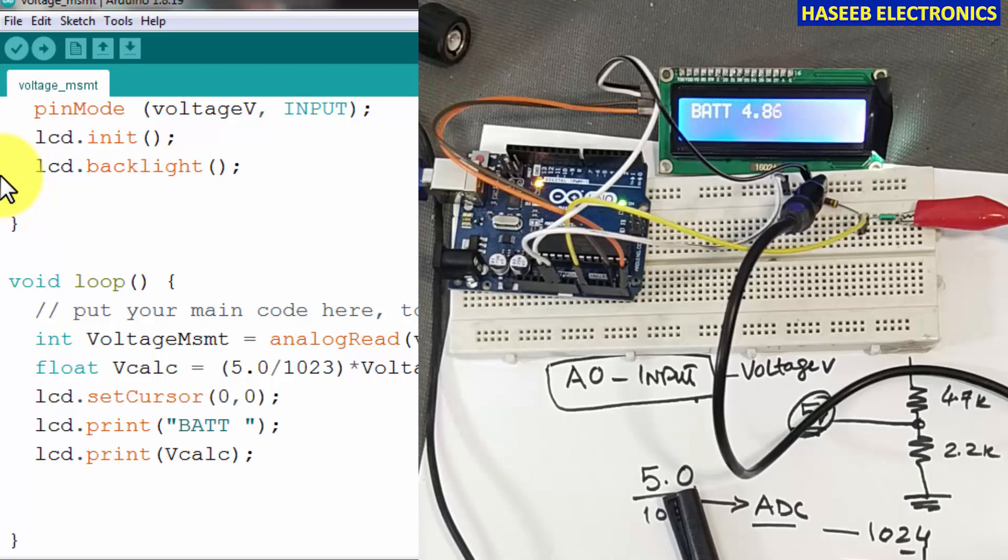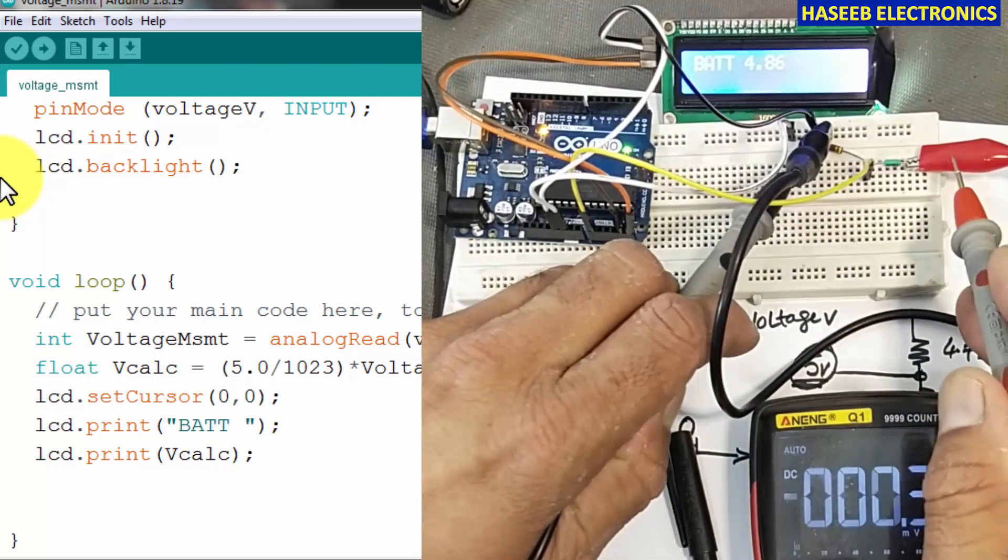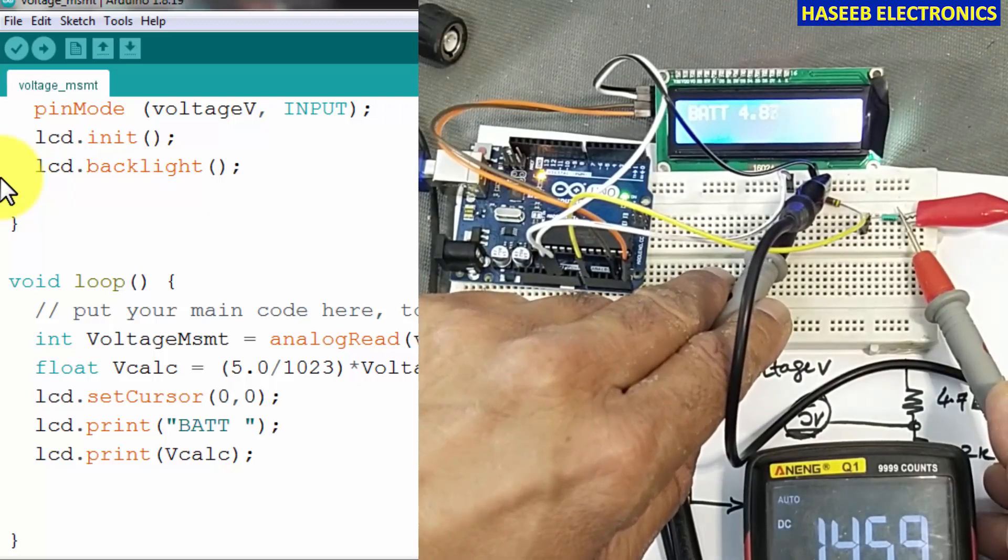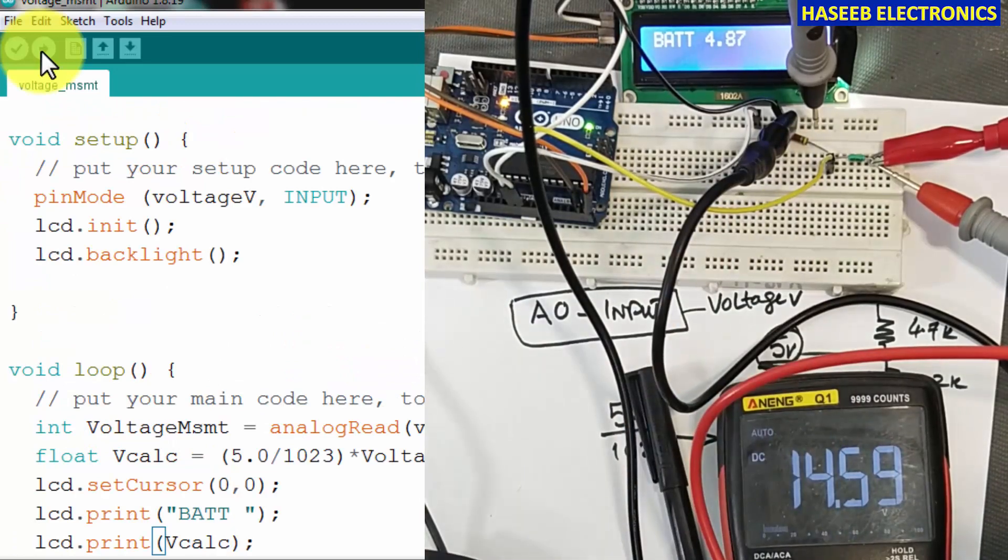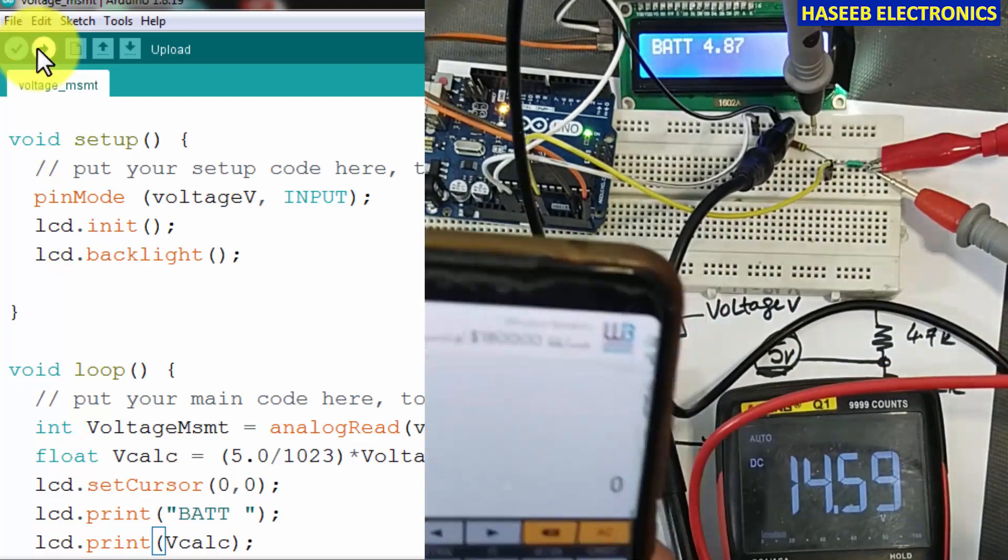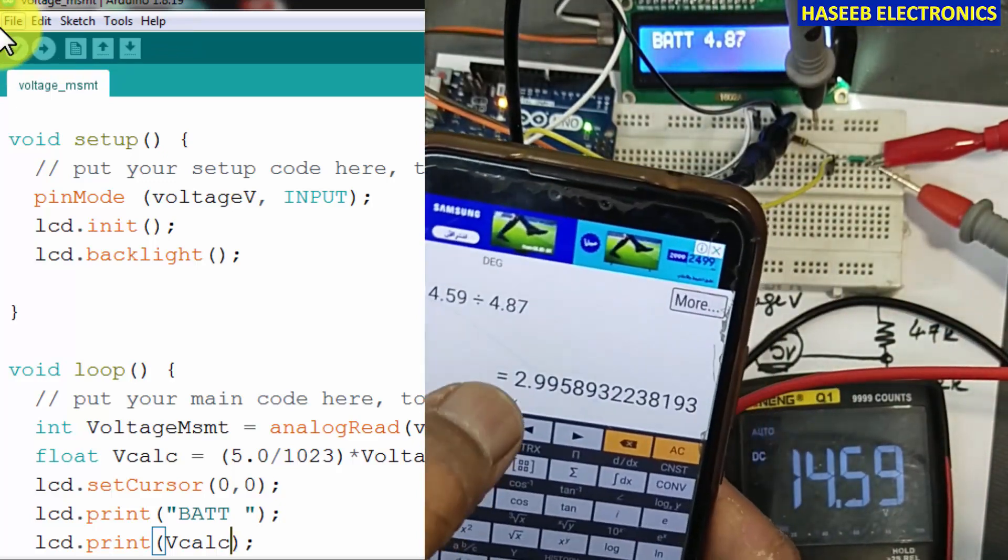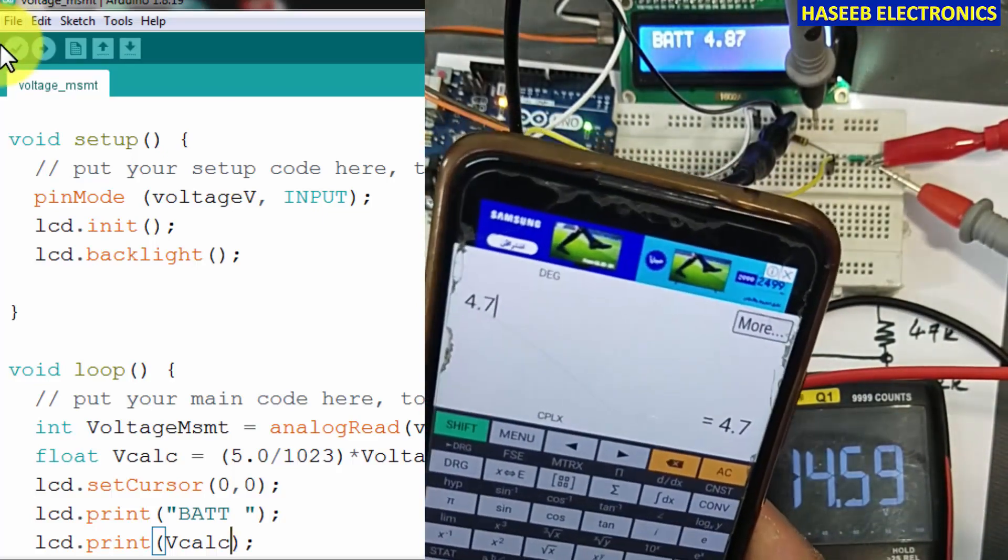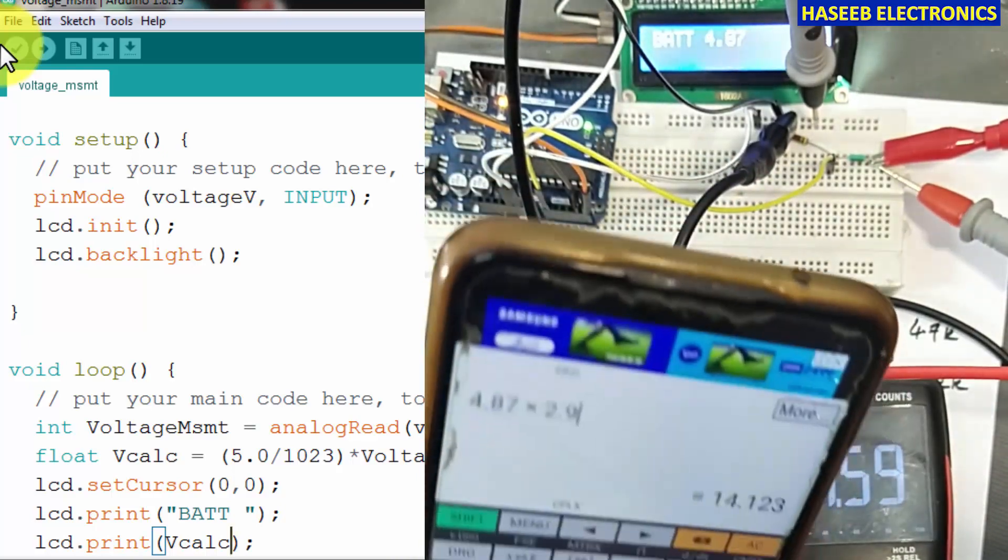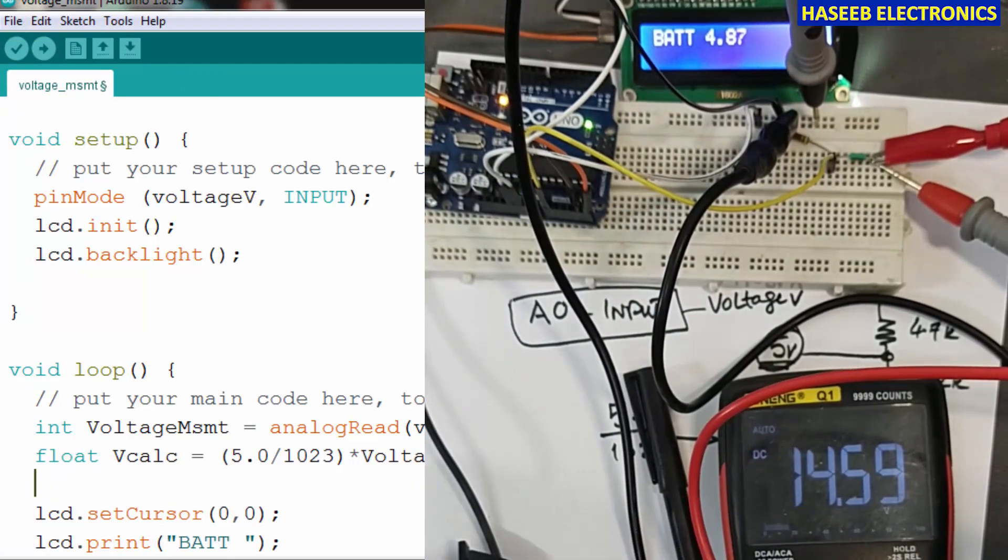4.77, and it is saying 4.8 volts. How much is the maximum voltage? It is 14.6 volts. This time it is measuring 4.87 volts. That is the drop voltage across this lower resistance. 14.59 divided by 4.87, which is being displayed here, equals 2.995. Now if you multiply 4.87 with 2.995, it will become exactly 14.59.